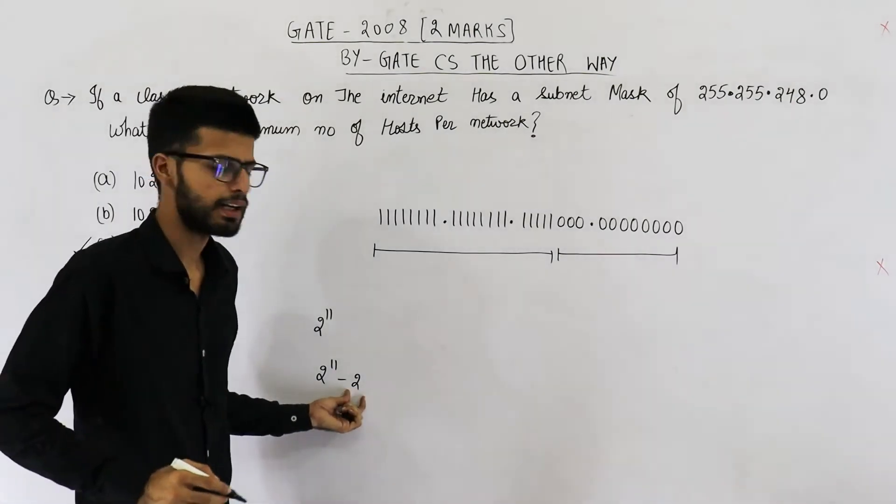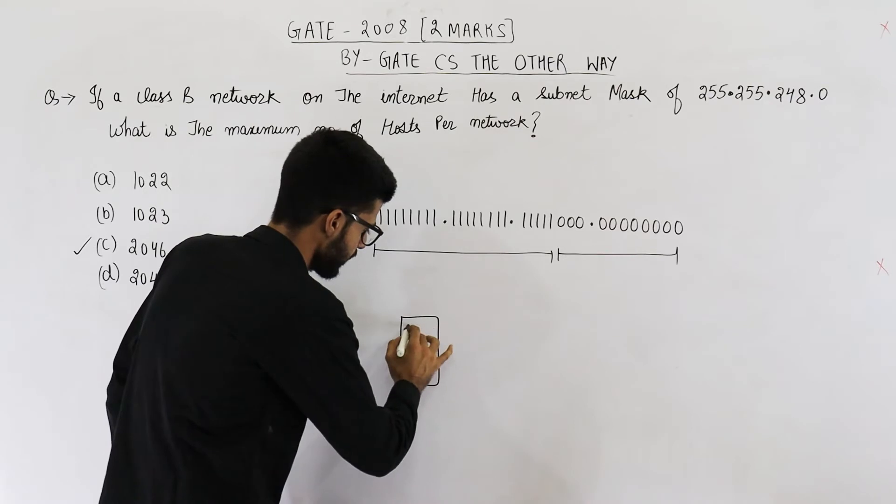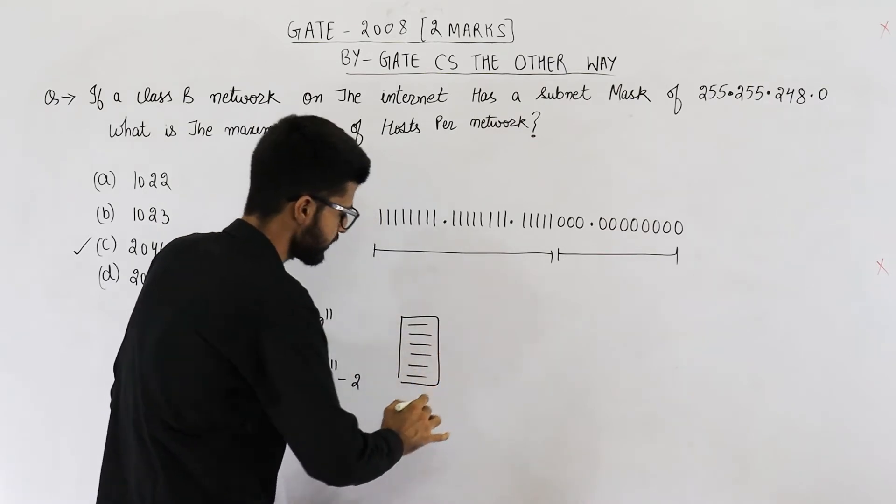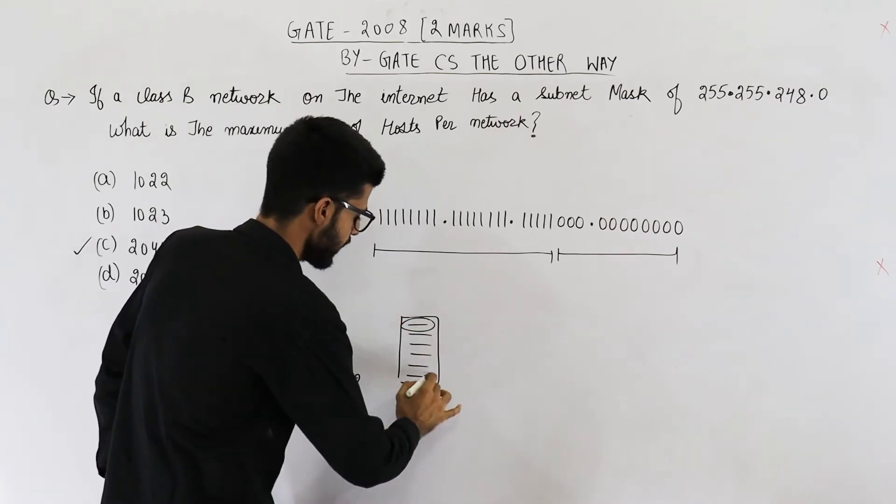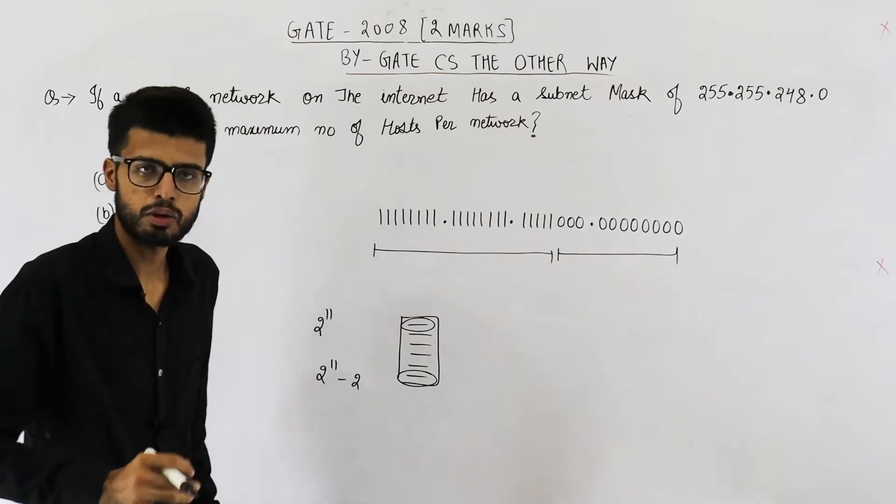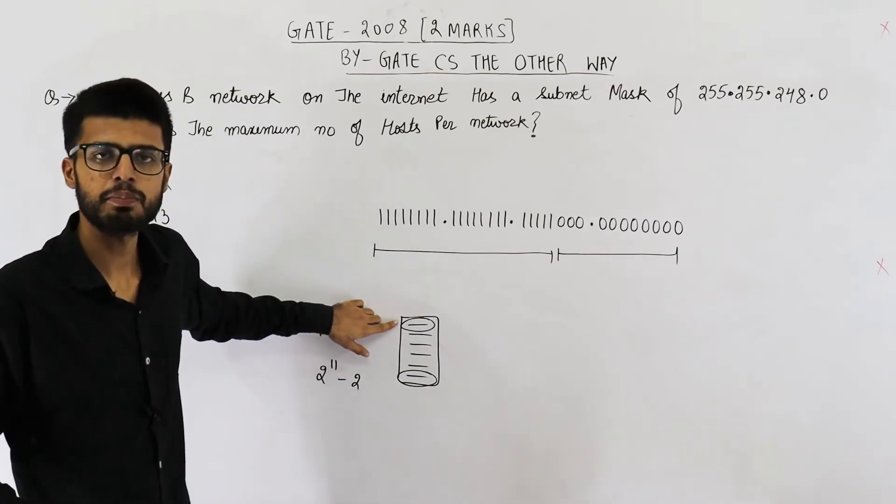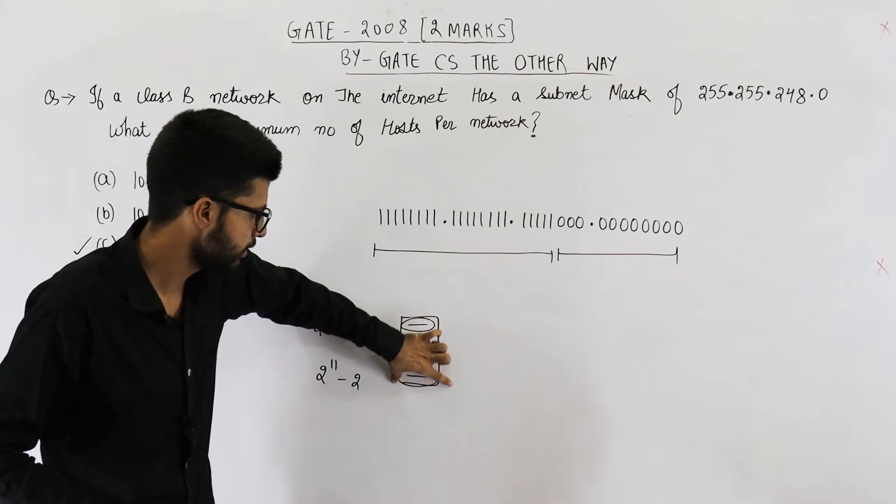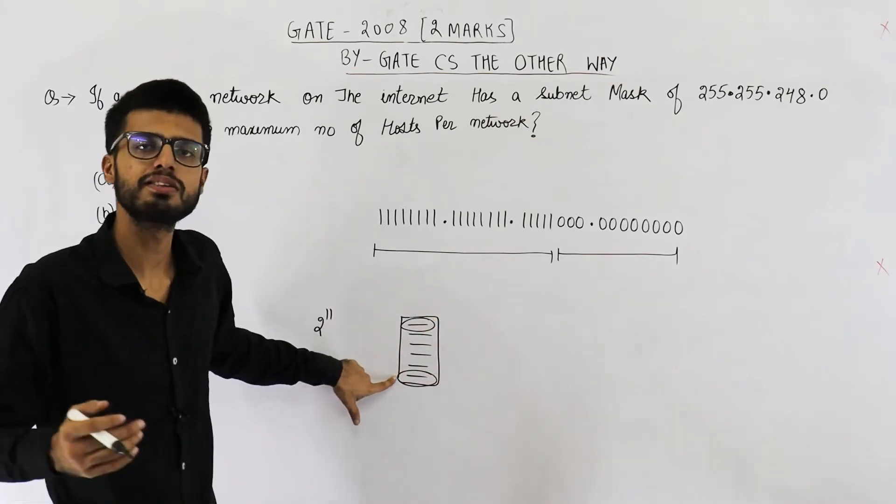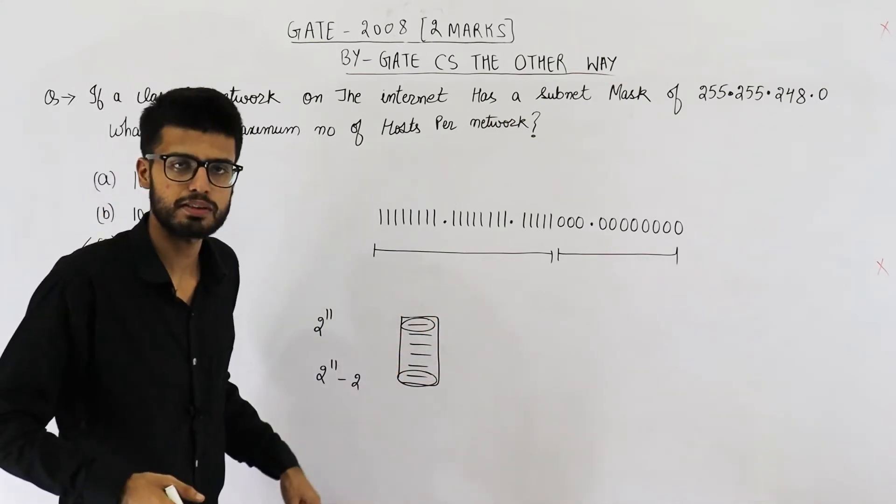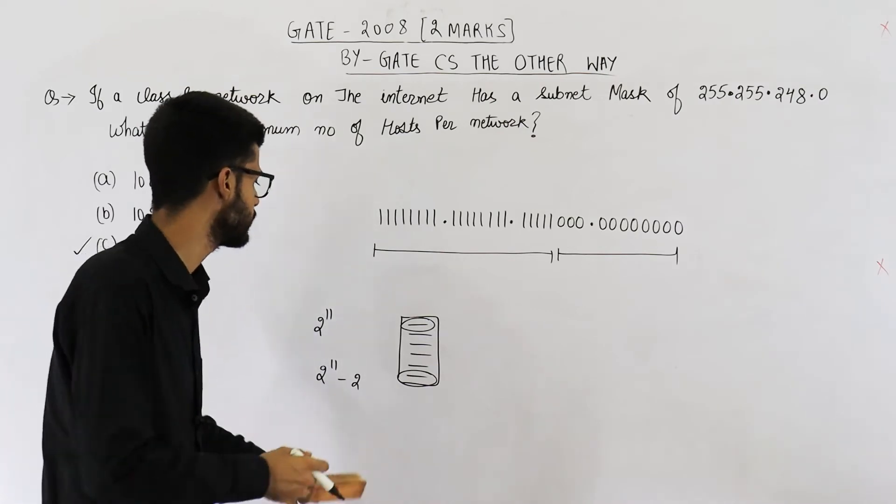Why have I subtracted 2? See if this is a network and all of these are IP addresses, first and last IP address will not be given to any host because first IP address is used as the network address for this network. Last one is used as the broadcast address for this network. Hence they are not assigned to any host.